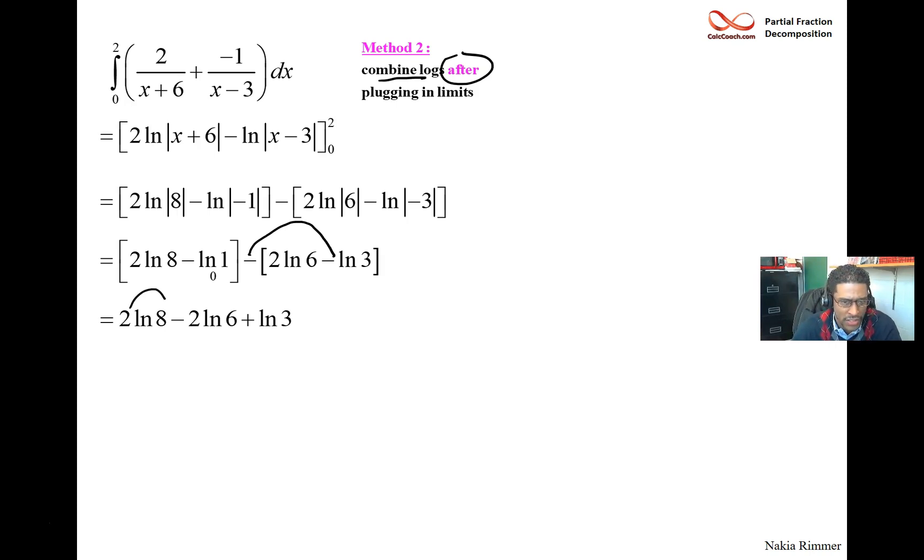If we want this in one log, let's put these coefficients up as exponents, and then let's combine them. Anything after a minus is in the denominator. Anything with a plus is in the numerator. So 8 squared times 3 all over 6 squared in one single log.